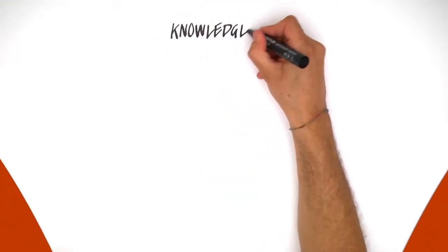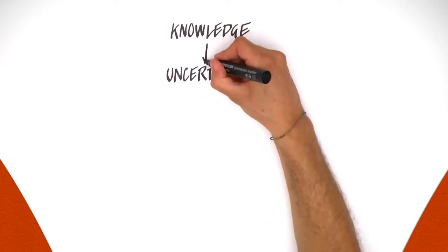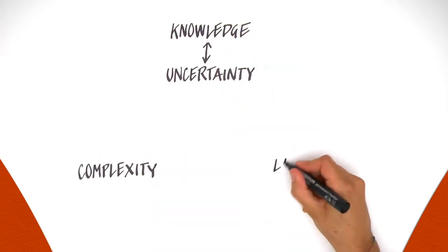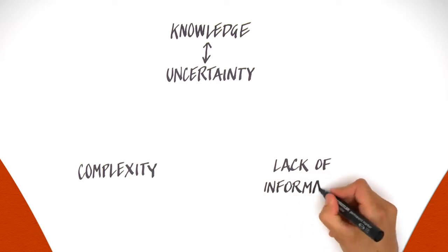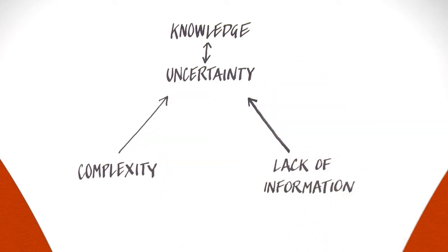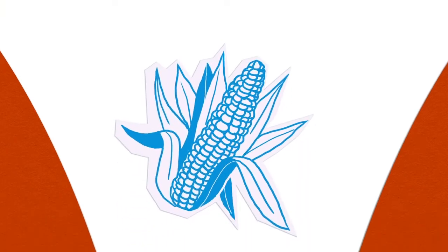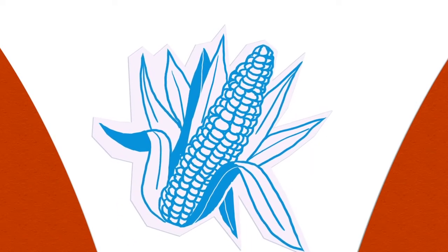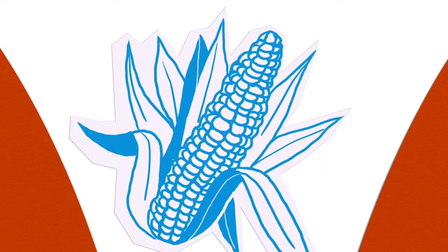Other phenomena, however, are more difficult to predict. Uncertainty may arise from the complexity of the phenomena or from the lack of complete information. Even a well-known phenomenon can be completely unpredictable in these cases.